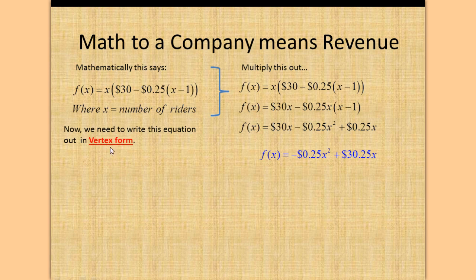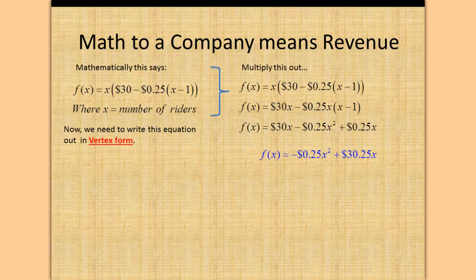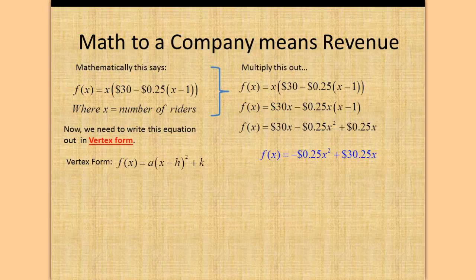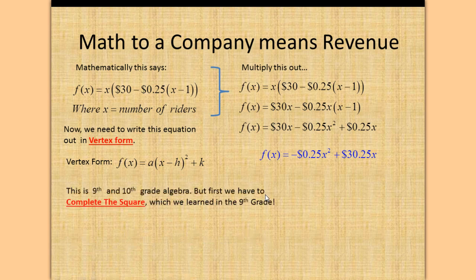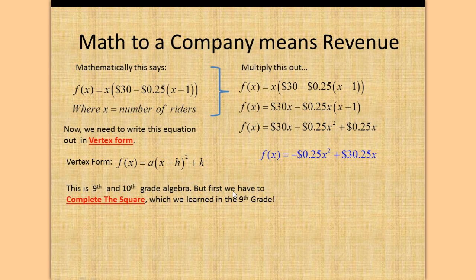Now we need to write this equation in vertex form, because it will be much more manageable. Vertex form is F(X) equals A times (X minus H) squared plus K. We have to do something we learned in ninth grade algebra called completing the square.